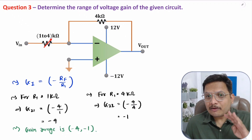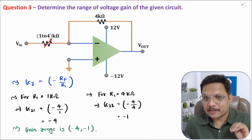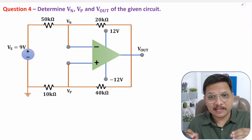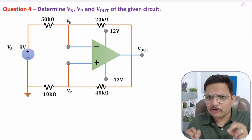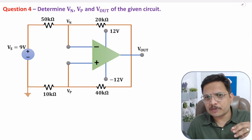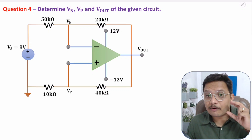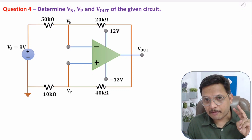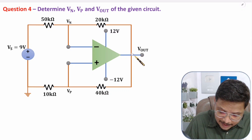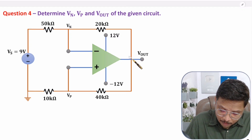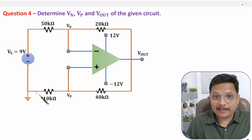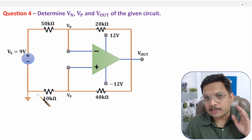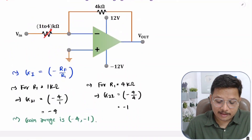Now I am going to solve the final fourth question. This fourth question is quite interesting as it involves different categories of feedback — here we have both negative and positive feedbacks. Because of this, one cannot use the direct equations which we used for previous questions.